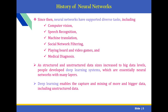There is a history of neural networks. Since then, neural networks have supported diverse tasks including computer vision, speech recognition and machine translation, social network filtering, playing board and video games, and medical diagnosis. As structured and unstructured data sizes increase to big data levels, people develop elite learning algorithms, which are essentially neural networks with many layers. One important technology alongside neural networks is deep learning, which enables the capture and mining of more and bigger data, including unstructured data.